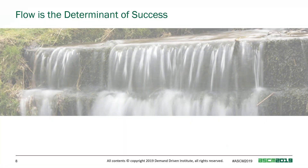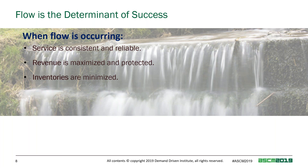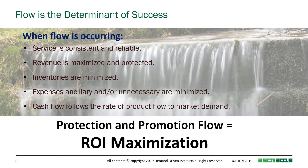Flow is actually the determinant of success. What do we mean by that? When flow is occurring, service is consistent and reliable — and we're talking about systemic flow, the entire flow of your business. Revenue is maximized and protected. Inventories are right-sized for your business, and unnecessary expenses are minimized. Cash flow follows the rate of product flow to market demand. So our operations goal: if we protect and promote flow, we will maximize our return on investment.